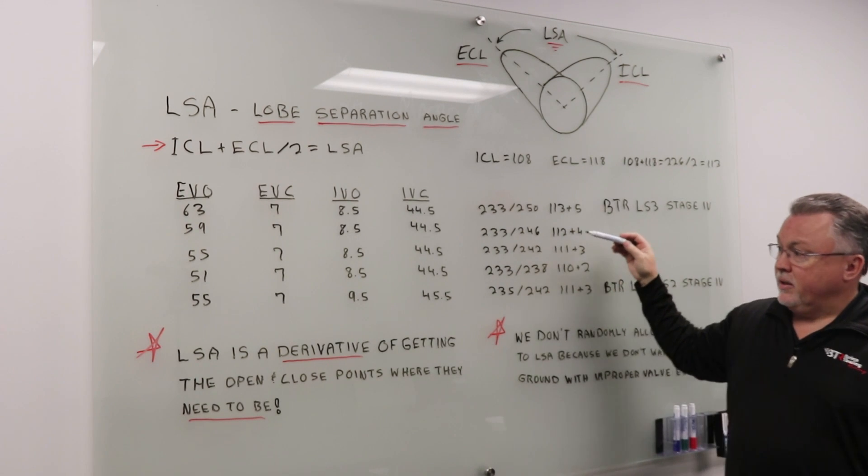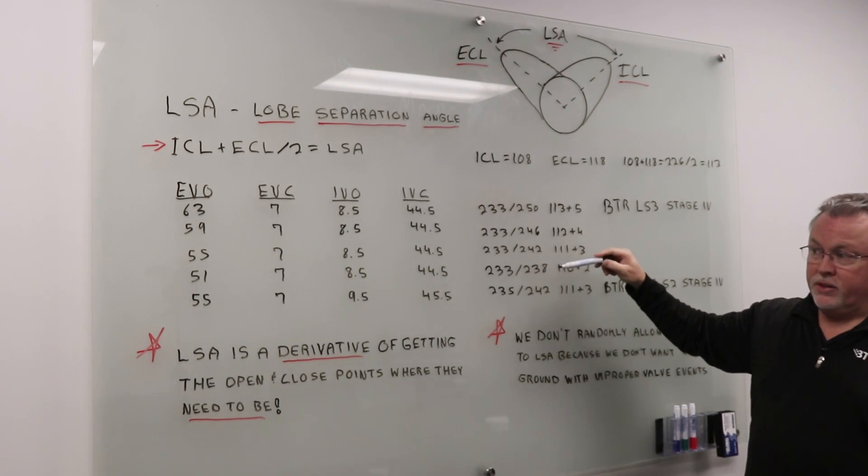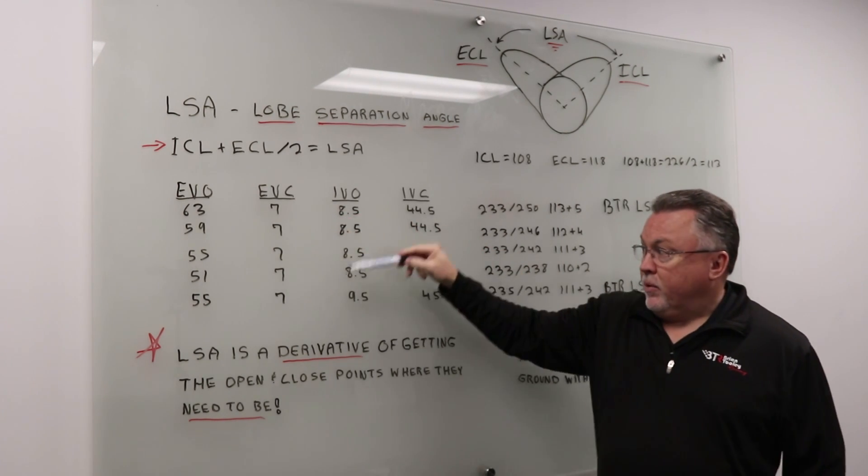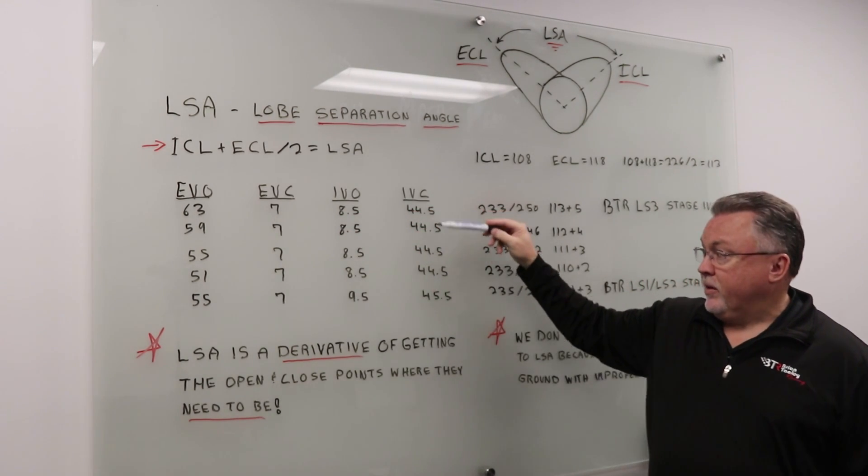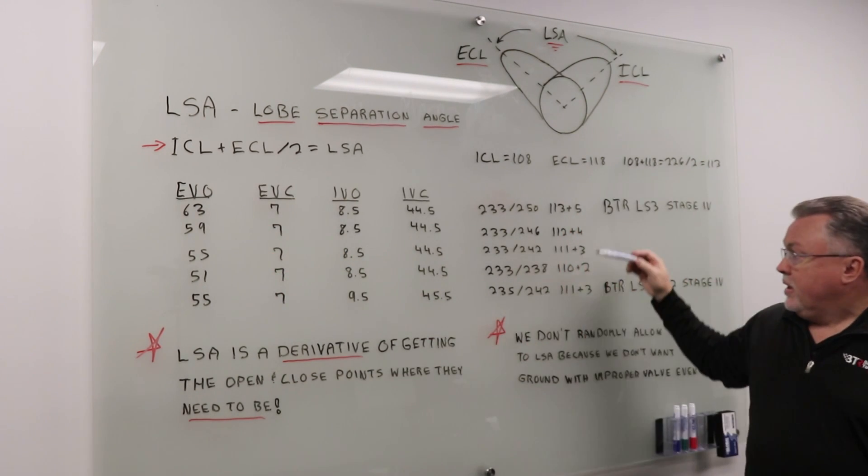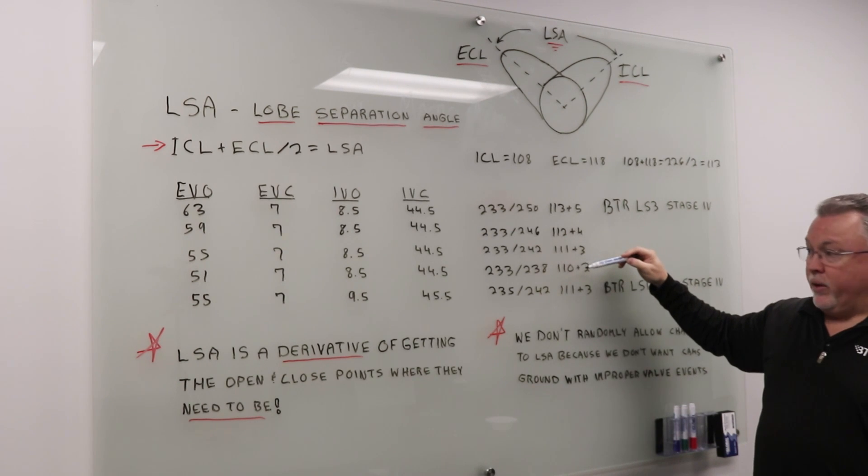But the other thing that we need to talk about is in these four examples where I've reduced the exhaust duration in four degree increments, you can see we've left the overlap events the same, we've left the intake valve closed the same. The only thing we've changed, exhaust valve open event, and we've changed this Lobe Separation Angle from 113 all the way down to 110.